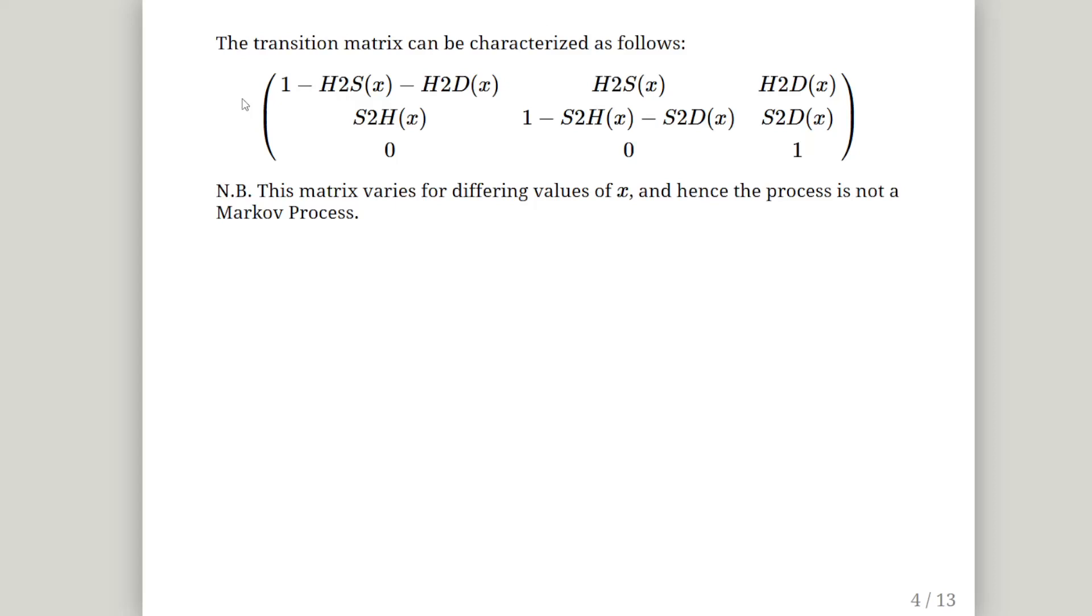So if you are 30 years old, there will be one set of values for this transition matrix. But when you turn 31, this transition matrix changes. And that change will be different from when you go from 31 to 32. So that's a very important distinction between Markov chains and what we're doing here.